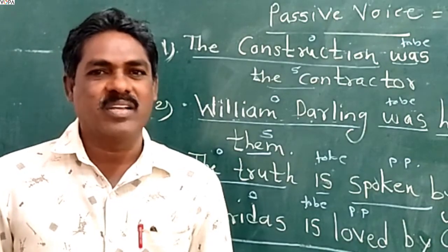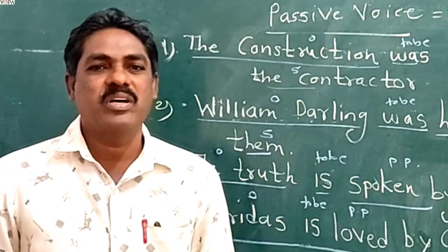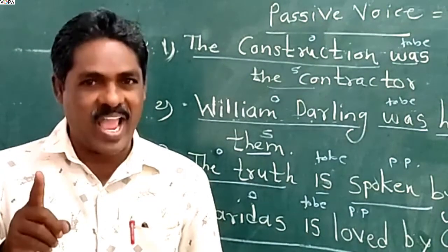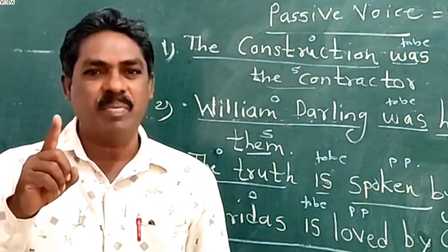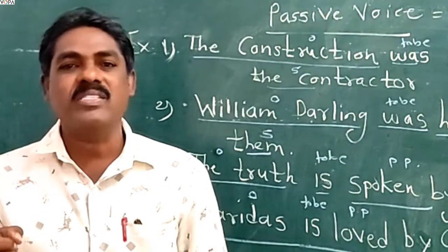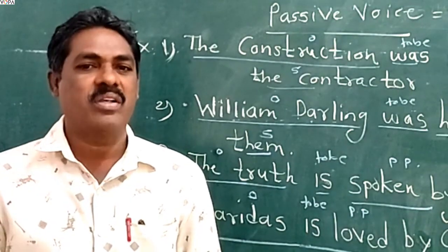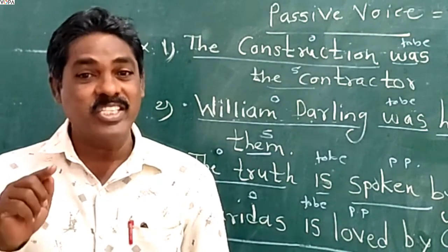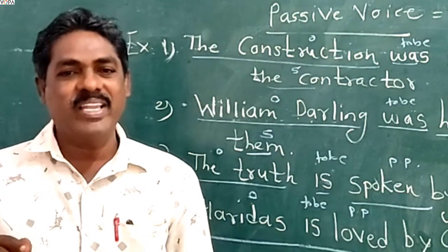Today we are going to learn about the passive voice. Passive voice means that the subject is the recipient of the action. A verb is in the passive voice when it shows that something is done to the person or thing denoted by the subject. The passive is so called because the subject is not active but passive.